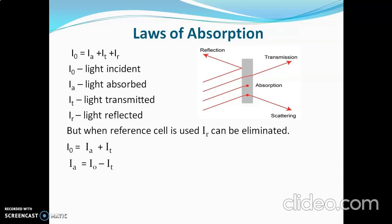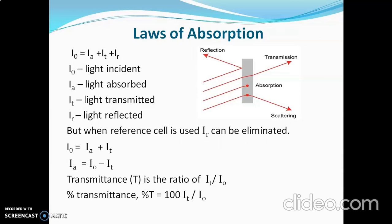To calculate absorbed light, we subtract transmitted light from incident light. This is the relation between light transmitted, light absorbed, and light incident. Transmittance is the ratio It/I0, and percent transmittance (%T) = 100 × It/I0. These are important terms while studying the laws of absorption.